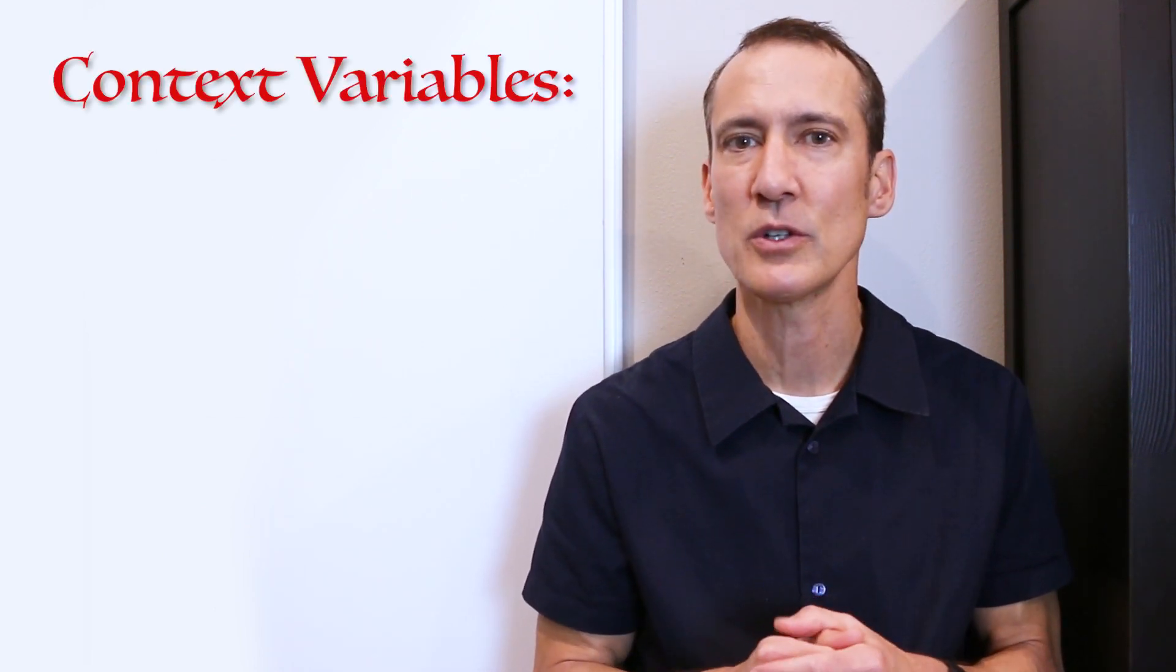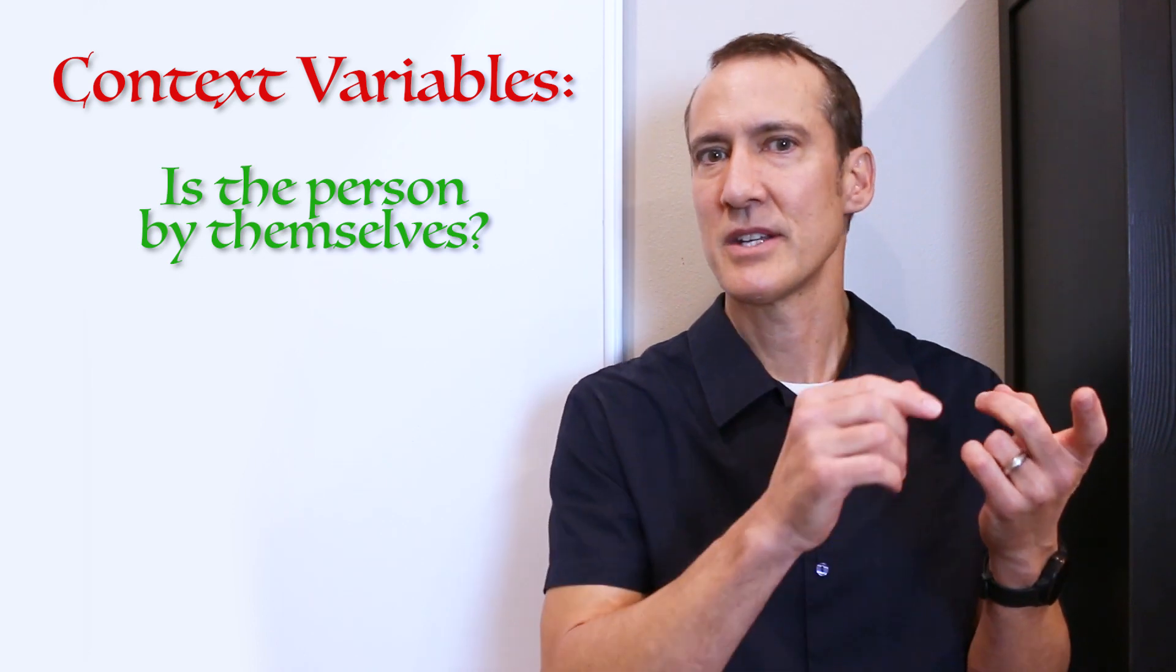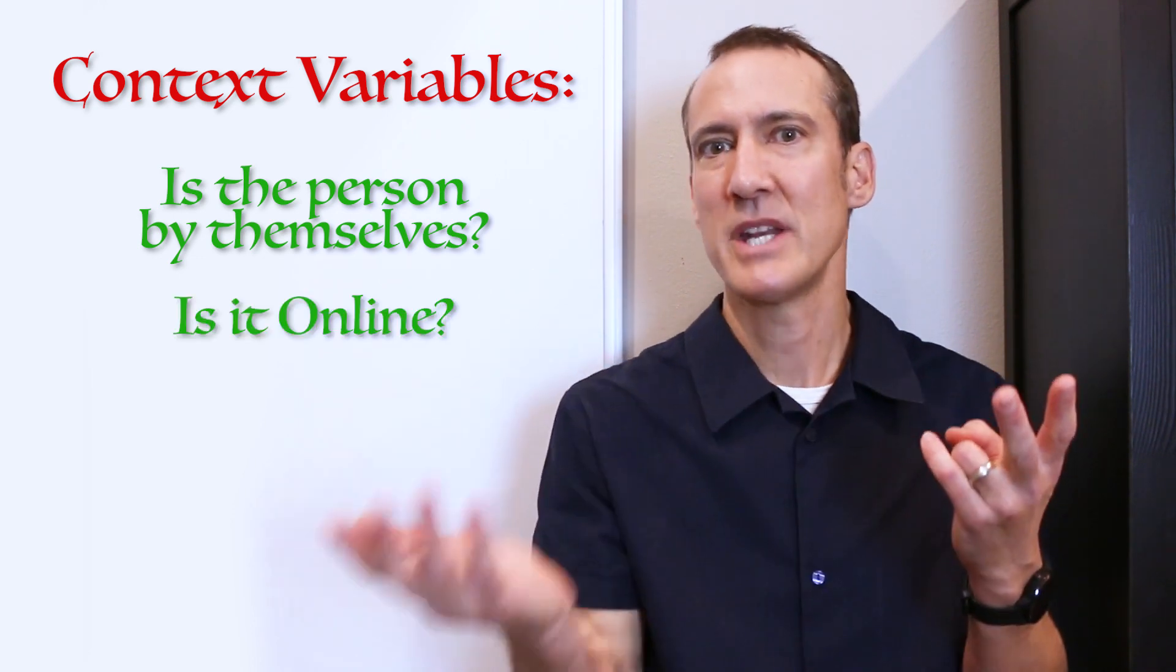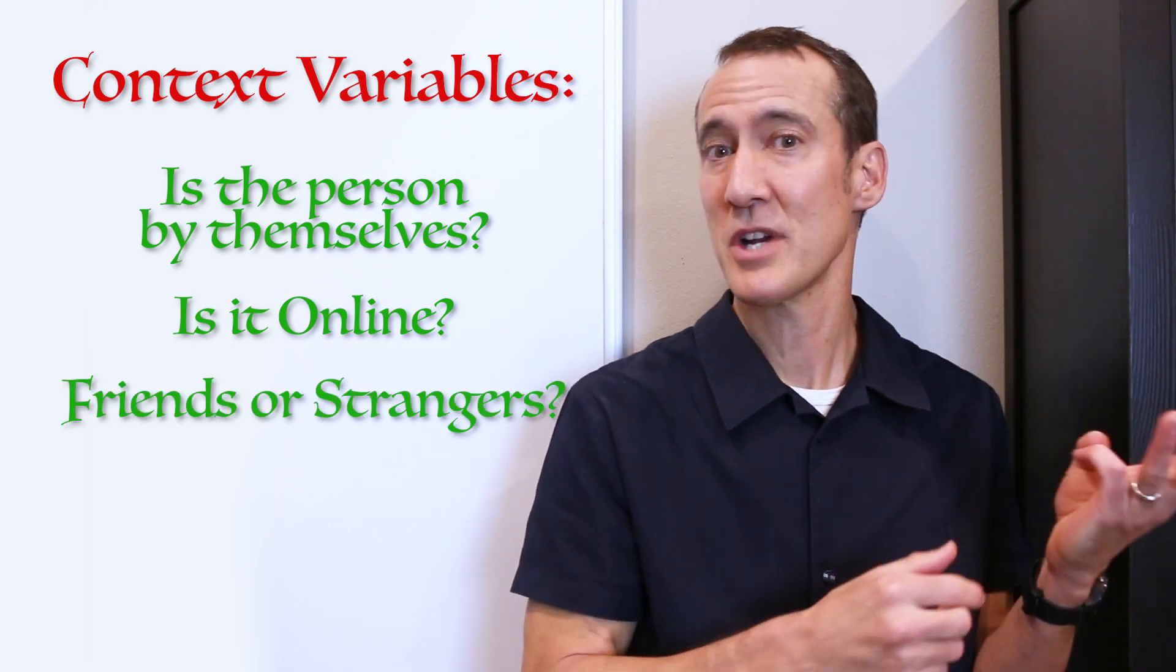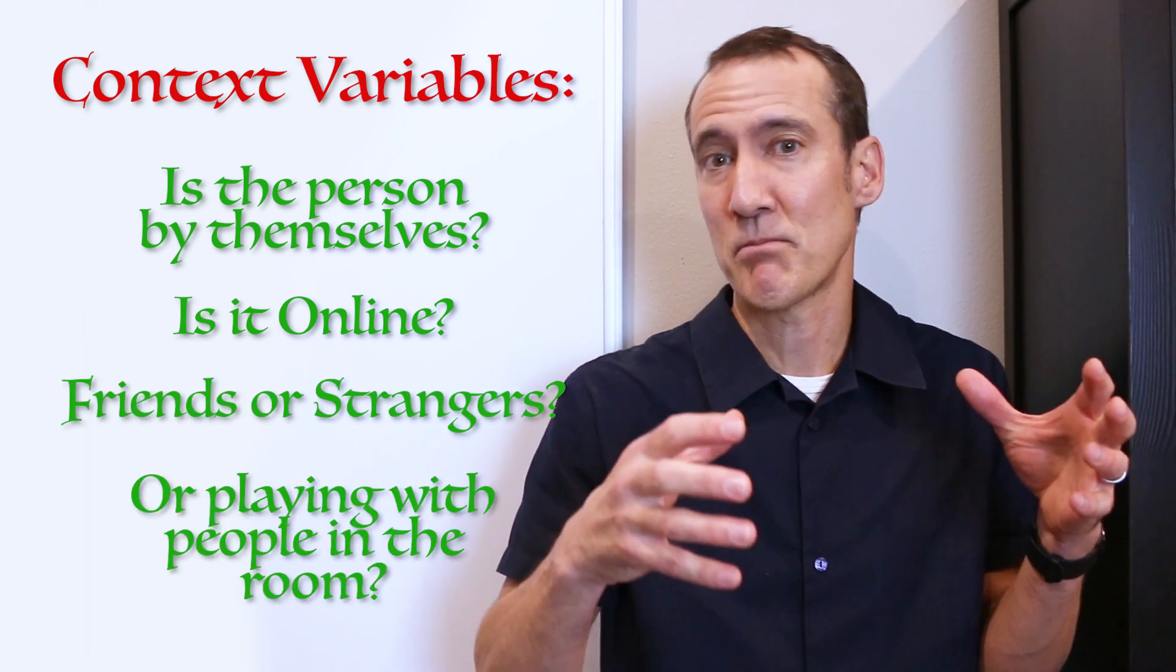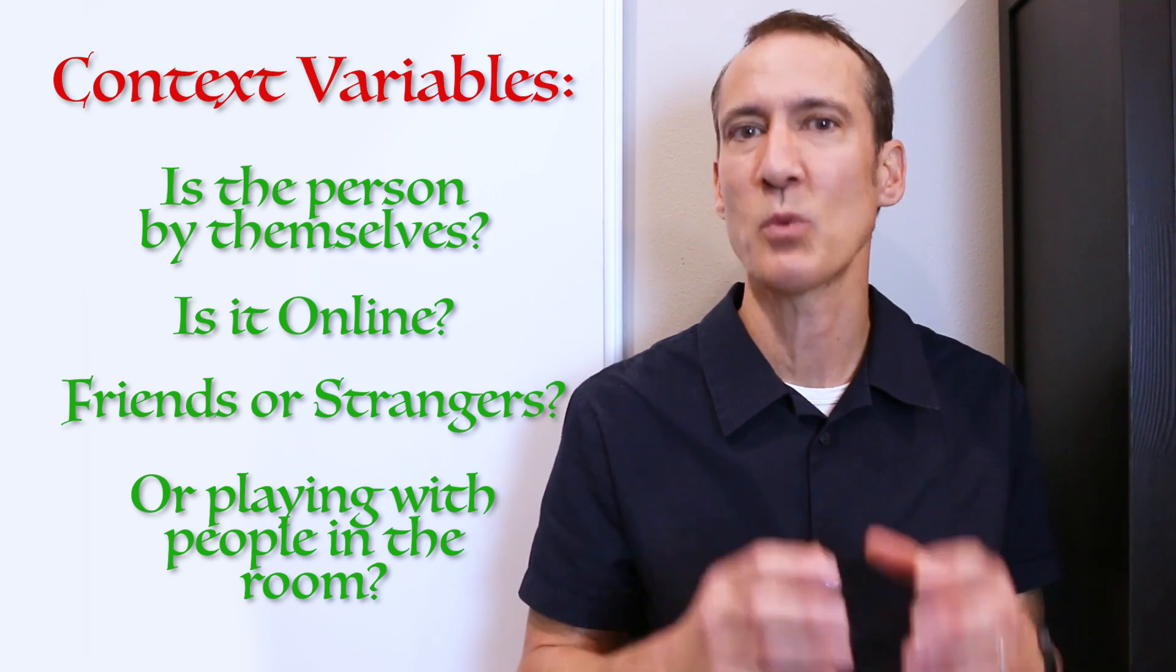Then there's the context variables. These could include: is the person by themselves? Is it online with many other people involved? Are these people online friends or strangers? Or even, are they playing a game with people in the room with them?